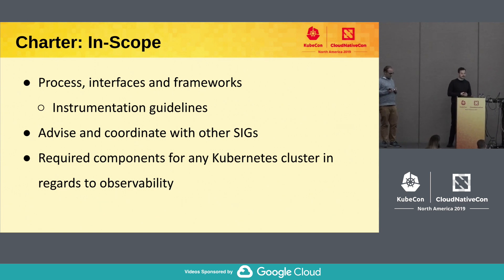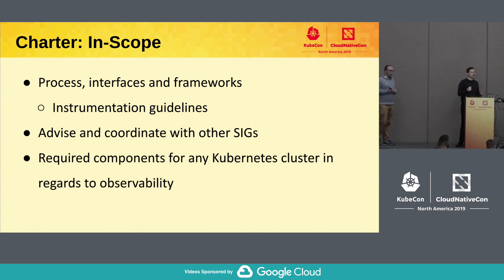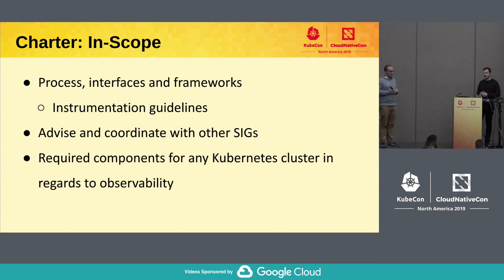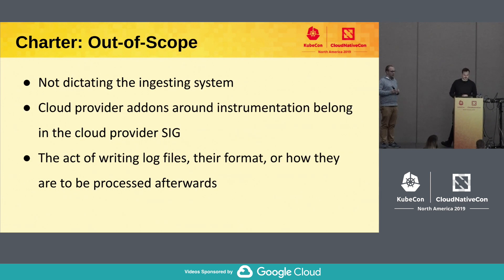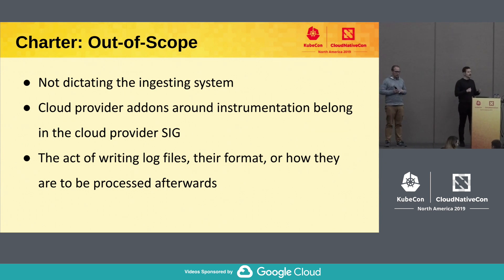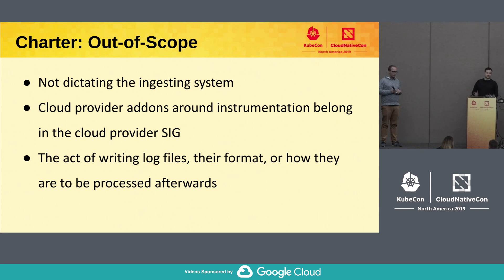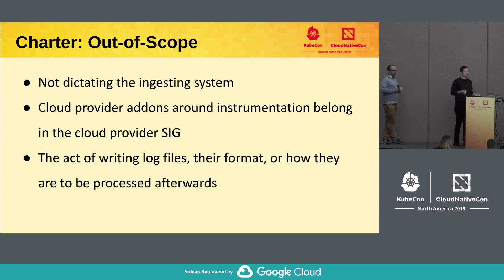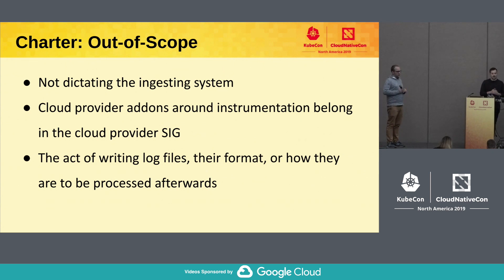We also own all of the components that must run in a Kubernetes cluster for observability purposes — we'll touch on that later. As a mirror to what's in scope, what's out of scope is: we don't want to own any of the processing, and we don't want to dictate which monitoring system you have to use. We expose metrics in Prometheus format, but that format is compatible with many monitoring solutions — you don't have to use Prometheus specifically.